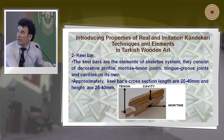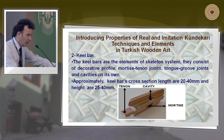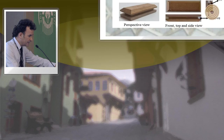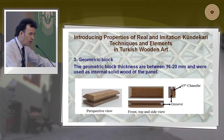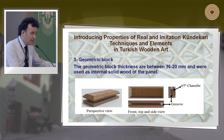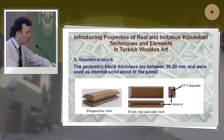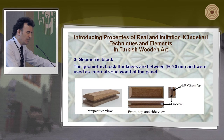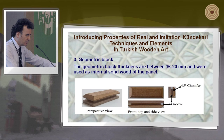You can see the tenon, mortise, and cavity — this area is for ornaments. Geometric block thickness is between 16 and 20 millimeters and they are used as internal solid wood or panel. You can see the perspective view, front view, top view, and side view.